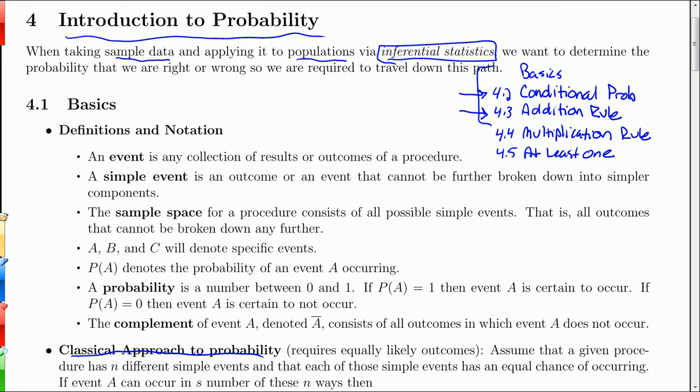But I include two other chapters because I think they are interesting just from the sake of probability. And that's the multiplication rule and then the probabilities of at least one. And so there are five sections of this chapter.